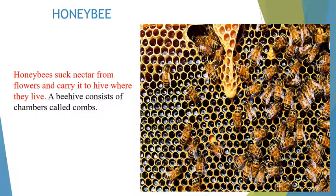Honeybees are usually attracted to sweet-smelling flowers. Such flowers produce a sweet liquid called nectar. Honeybees suck nectar from flowers and carry it to the hives where they live. A beehive consists of chambers called combs. Honeybees store the nectar in these combs, where it changes into honey.